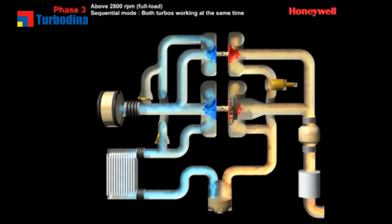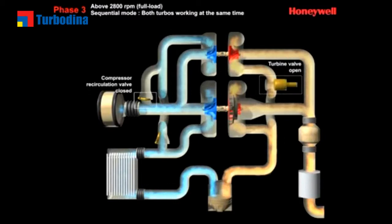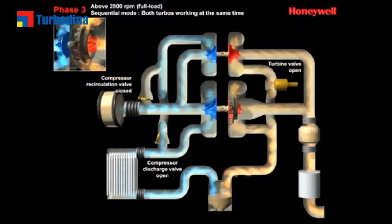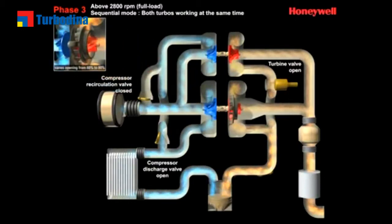As engine speed increases, and both turbos operate in full sequential mode, the turbine valve channels optimum gas flow to each of the turbos, ensuring that exactly the right level of engine boost is provided at just the right time. At the same time, a compressor recirculation valve regulates the pressurized air entering the combustion process.